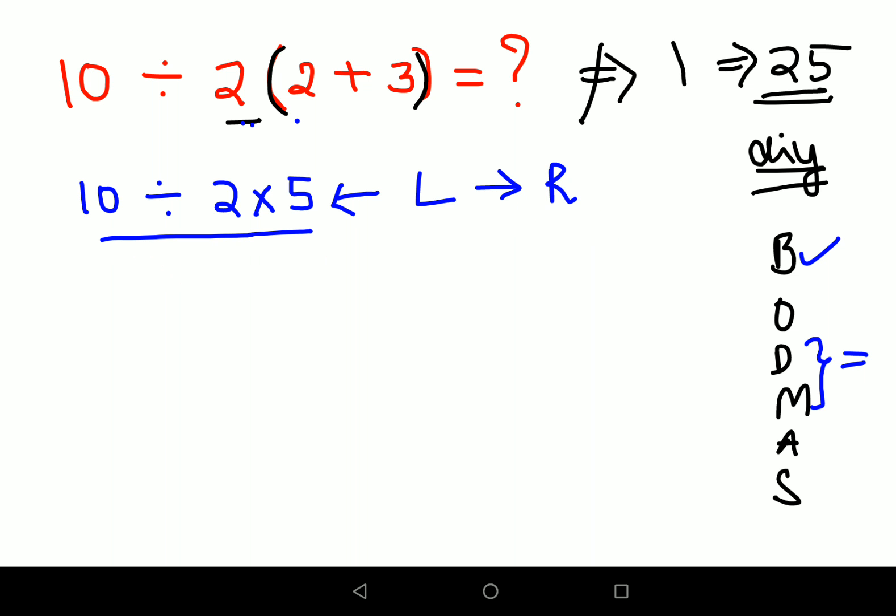So here we will now do. See if you had done right to left, I am just explaining why you should always stick to left to right. Because if you had done right to left, it would then become 10 divided by 2 into 5 gets you 10. Then also your answer comes out to be 1.